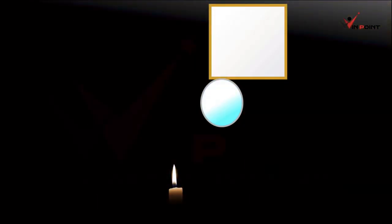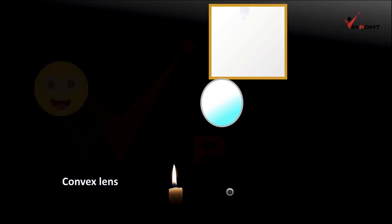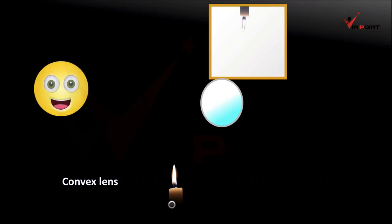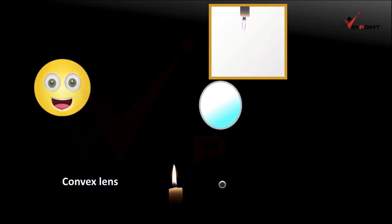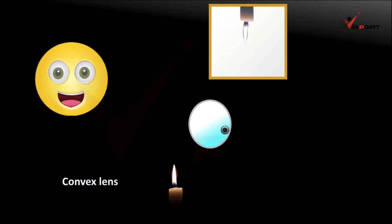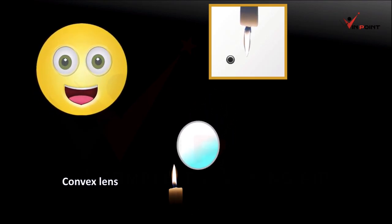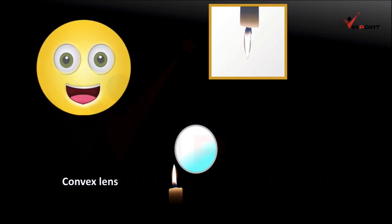Now we can discuss about image formation. With a convex lens, we will get an image. Convex lens forms a real and inverted image. A real image is one which we can project onto a screen. Here we are able to make an image on the screen, so it is a real image. When we are adjusting the distance between the lens and the candle, the size of the image is also changing.